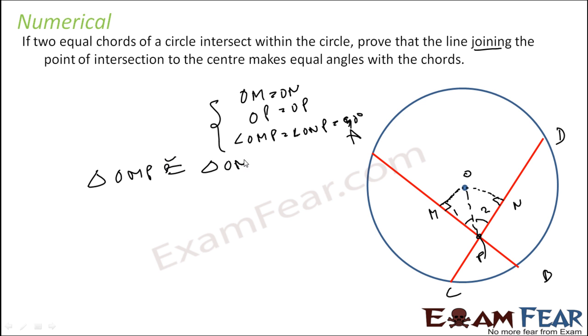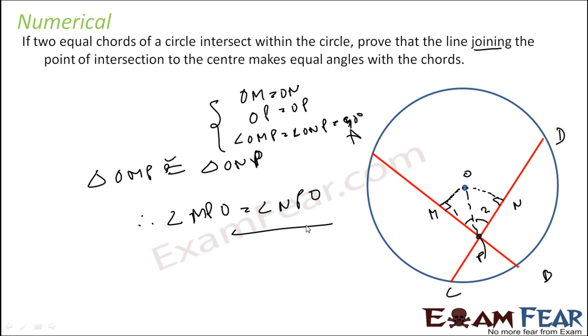If these two triangles are congruent, we can see that these two angles MPO and NPO are equal.